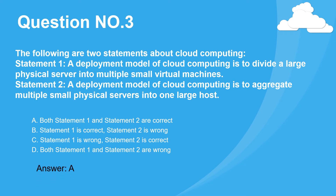Question 3. The following are two statements about cloud computing. Statement 1: A deployment model of cloud computing is to divide a large physical server into multiple small virtual machines. Statement 2: A deployment model of cloud computing is to aggregate multiple small physical servers into one large host.